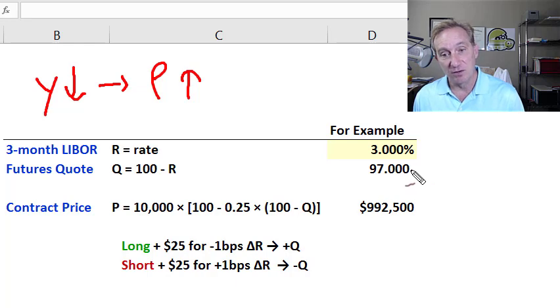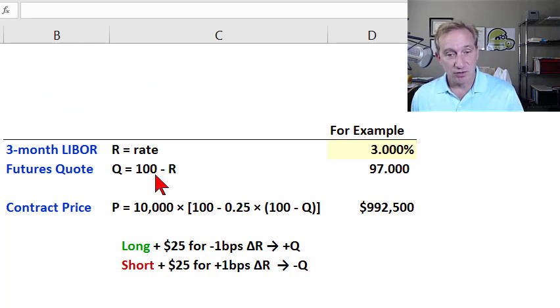The futures quote is an element in the contract price. That's part of the contract specification. I won't dive into the formula—it's not difficult to understand.